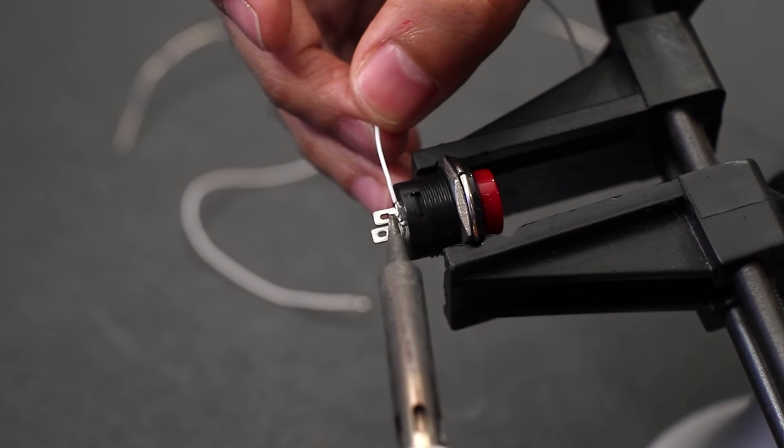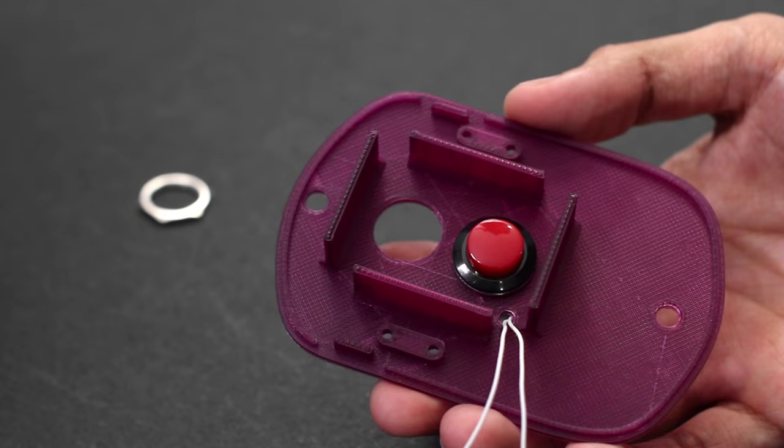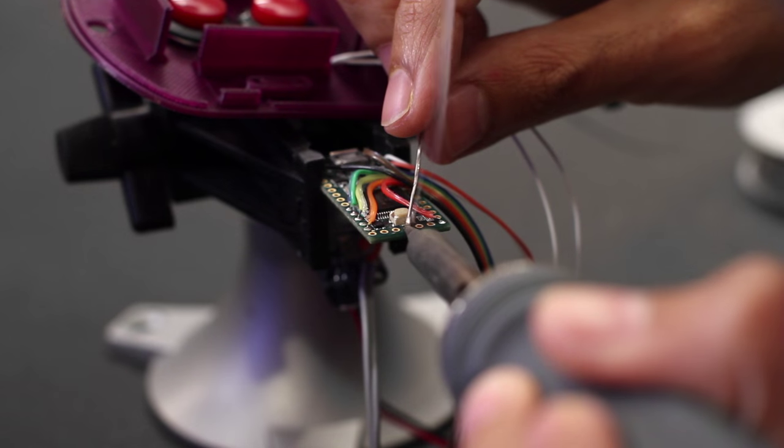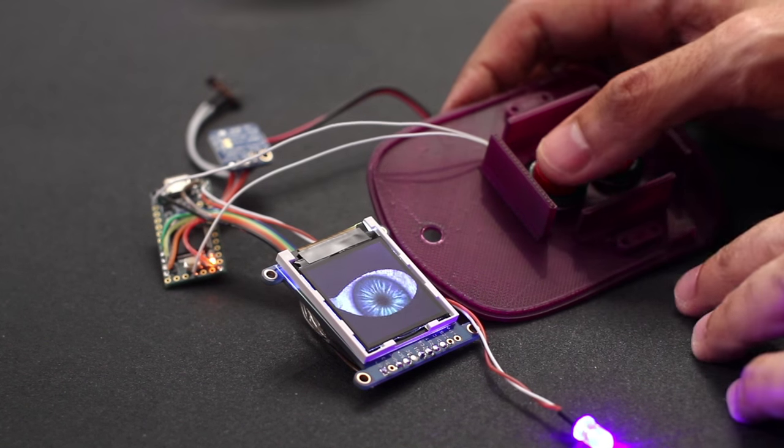We'll use a 16mm push button to activate the winking function and mount it to the back panel. A second push button will be used to trigger the doorbell. Connect the wires from the push buttons to the Teensy board. Now we can test the circuit by pressing the button to make the eye blink.